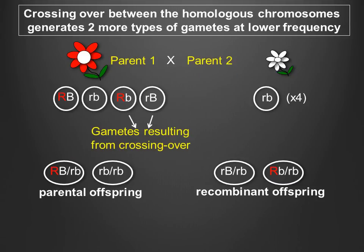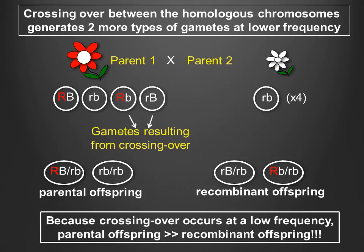Note that in this scenario, as in the scenario where the genes are located on different chromosomes, the same four classes of offspring are formed. However, because crossing over occurs at a relatively low frequency, the parental offspring outnumber the recombinant offspring. Since all offspring inherit a chromosome carrying two recessive alleles from the homozygous recessive parent, the chromosome inherited from the heterozygote parent determines whether the offspring are parental or recombinant types. Parental offspring inherit a non-crossover chromosome, while recombinant offspring inherit a crossover chromosome. The exact proportion of recombinant offspring is dependent on the frequency of crossing over between the two genes, which in turn depends on the distance between the genes. The closer the two genes are, the less likely crossing over is to occur between them.